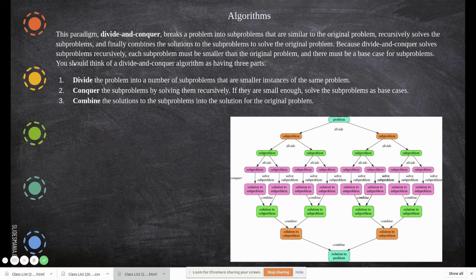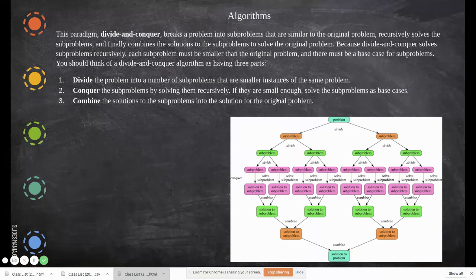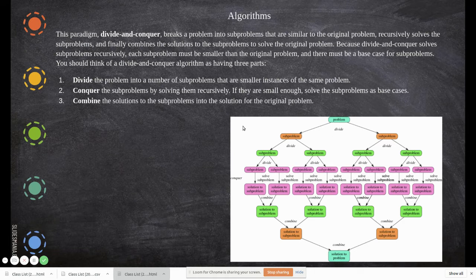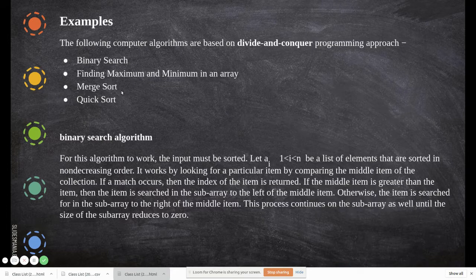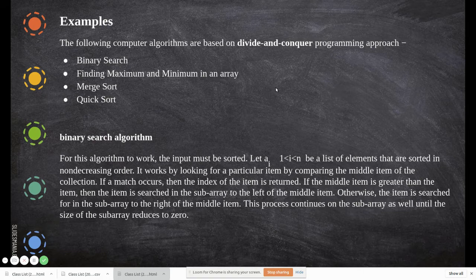You should think of divide and conquer as having three parts: divide the problem into sub-problems that are smaller instances of the same problem; conquer by solving them recursively, using the base case when they are small enough; and combine the solutions into the solution to the original problem. Algorithms based on divide and conquer include binary search, finding maximum and minimum in an array, merge sort, quick sort, and selection sort.